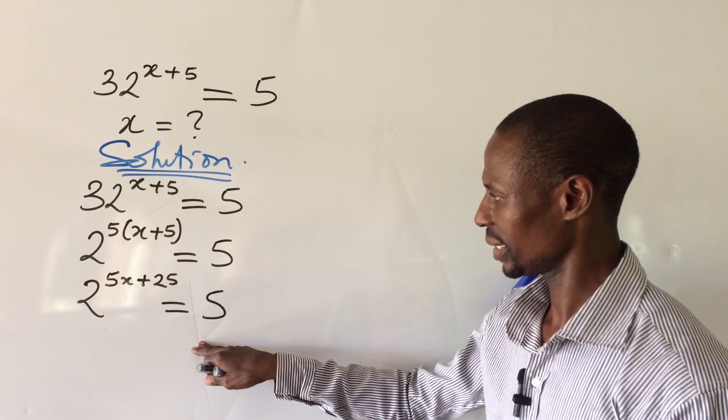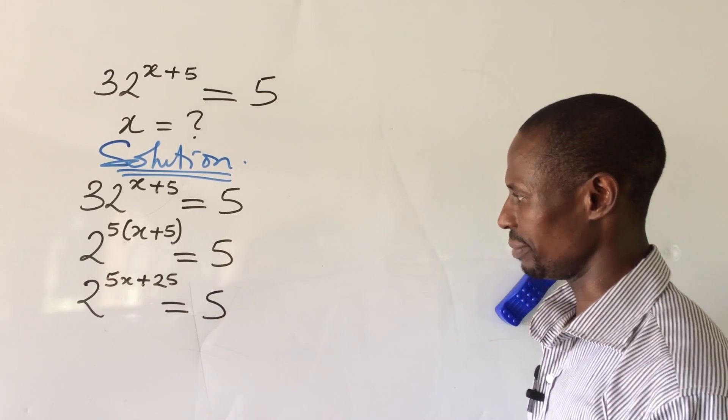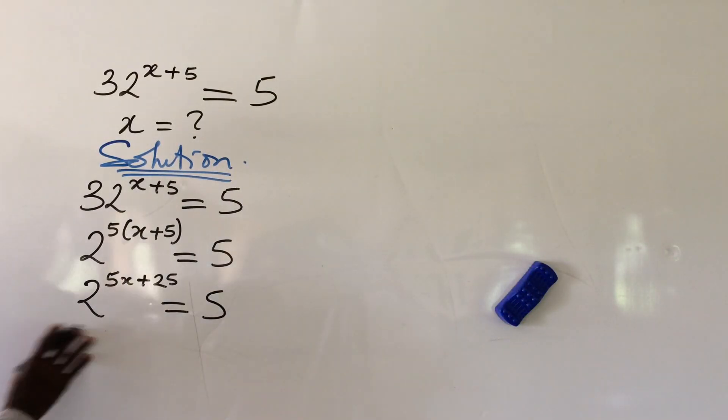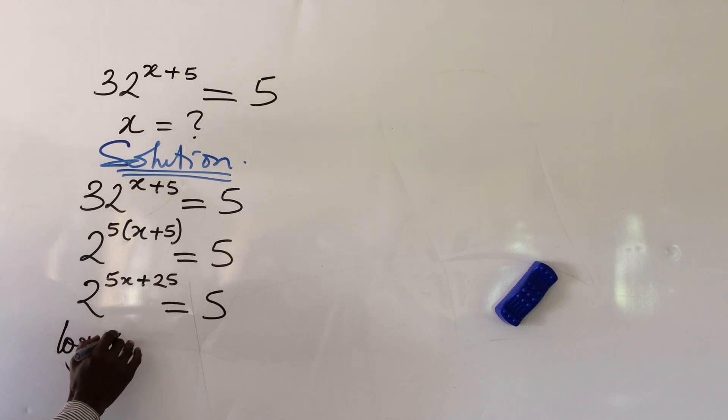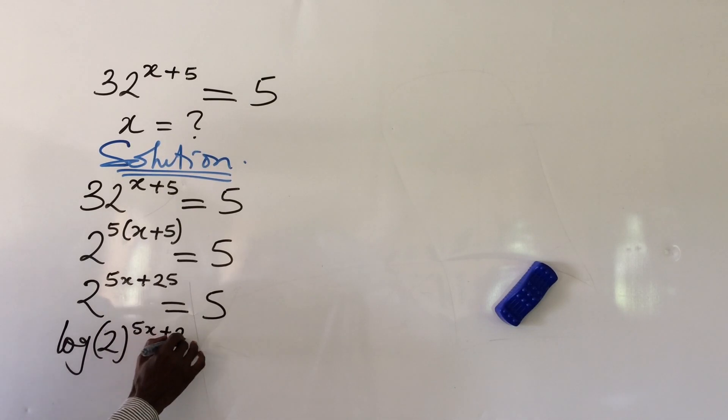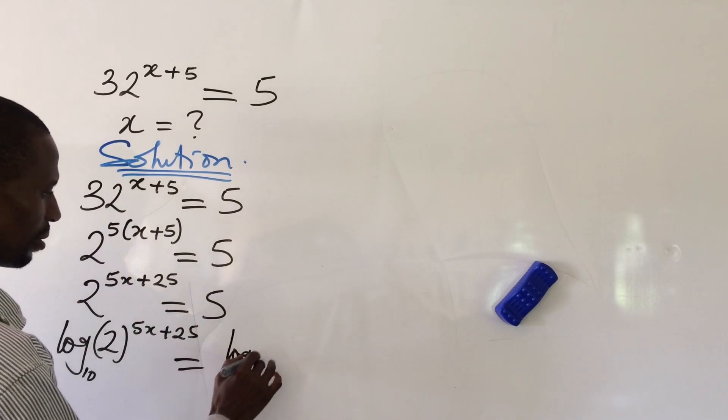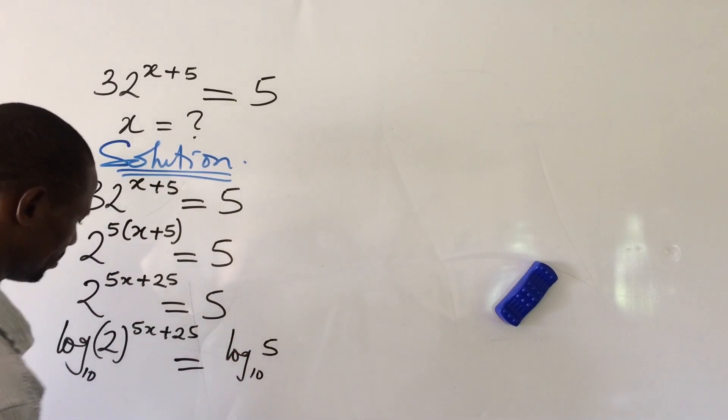So what do we do at this point? The bases are different. And so we take log to base 10 of both sides of the equation. So if we do that, we're going to have this to be log your 2 to the power of your 5x plus 25, base 10, equal to log 5 base 10. Good.